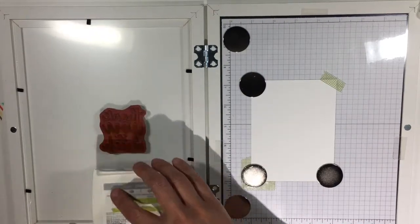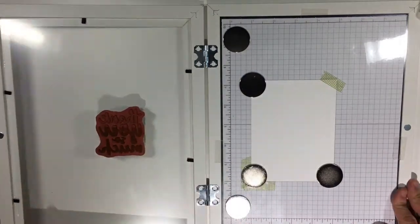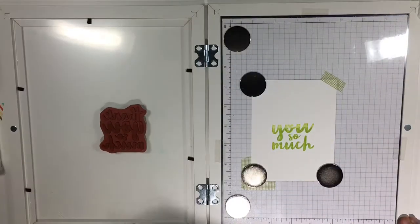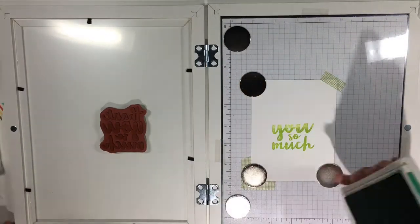Now just close your frame and press the window to your stamp and it will adhere. I'm using some Lemon Lime Twist ink to ink up just the bottom half of my stamp. Close the door of the frame and press firmly onto your paper. There you go. Bottom half of the stamp is inked.